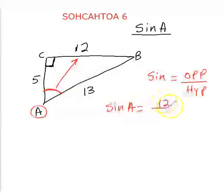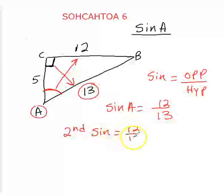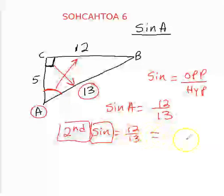The opposite is equal to 12, and the hypotenuse is always across from the right angle, so it's 13. So it'd be 12 divided by 13. To find the angle, use second sine: 12 divided by 13. Remember to do that in your calculator. Let's do second sine, 12 divided by 13.